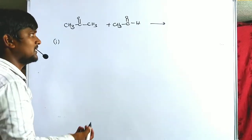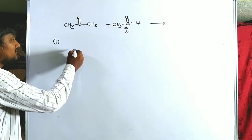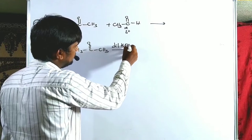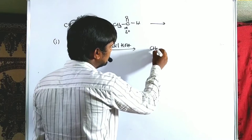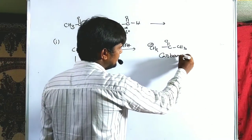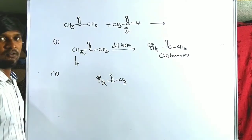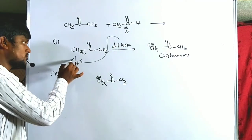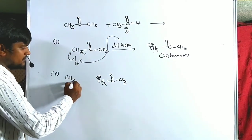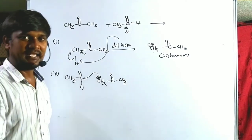With one aldehyde and one ketone, we examine what type of product is produced. The first step: aldehydes are the best carbonyl acceptors, meaning they are electro-positive, while the other acts as the nucleophile forming a carbanion. Taking acetone treated with diluted base, we remove one proton from the alpha position of the ketone, forming –CH₂⁻, which is the carbanion.